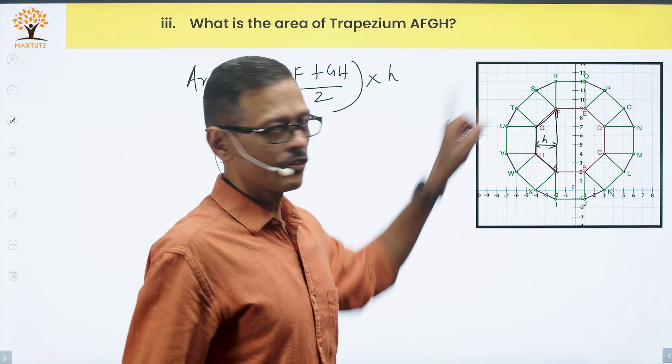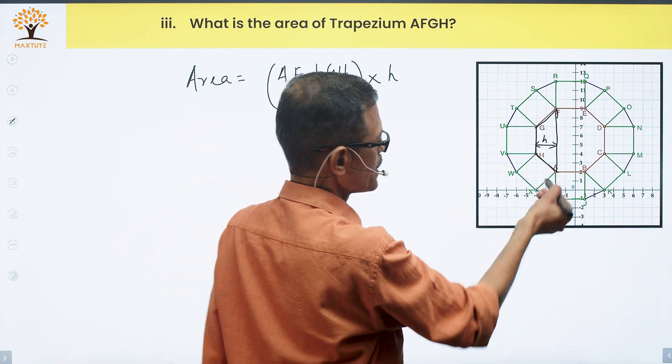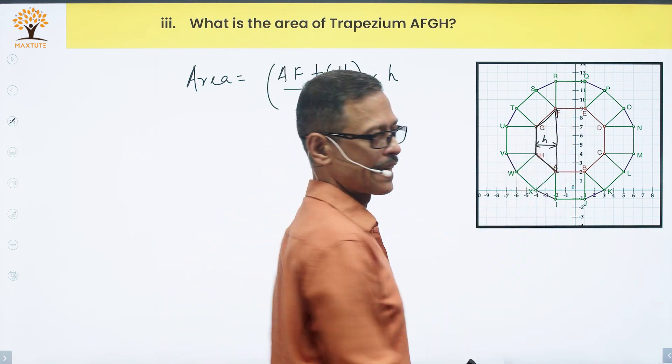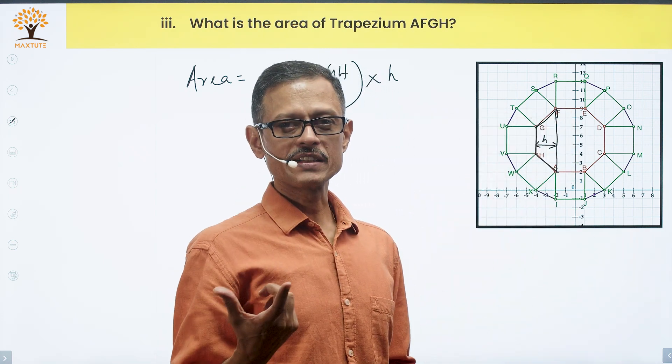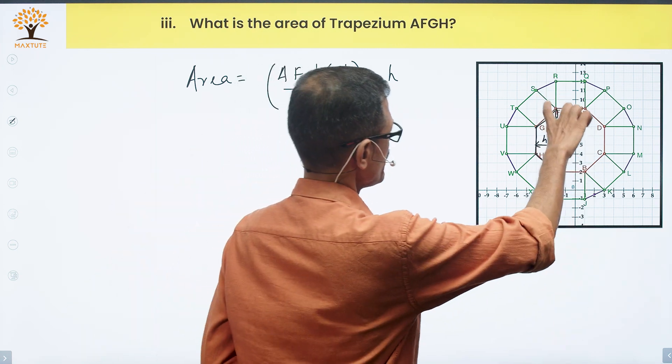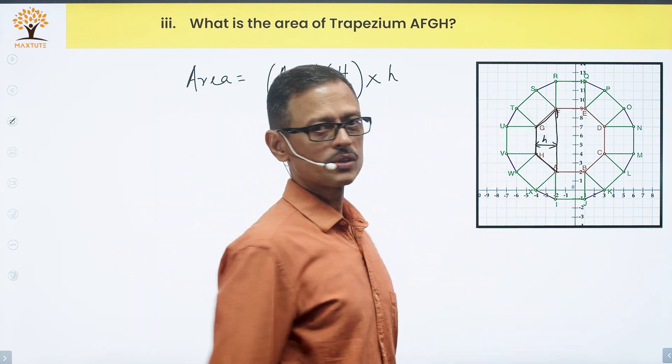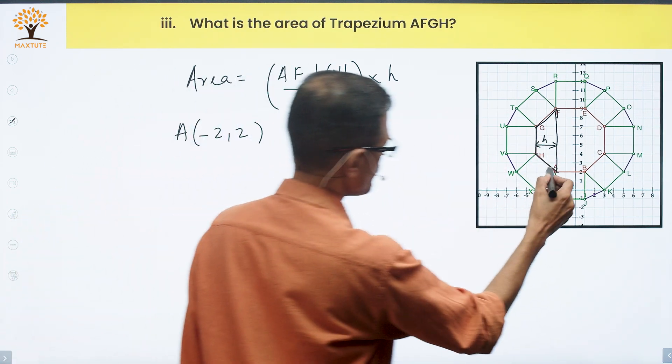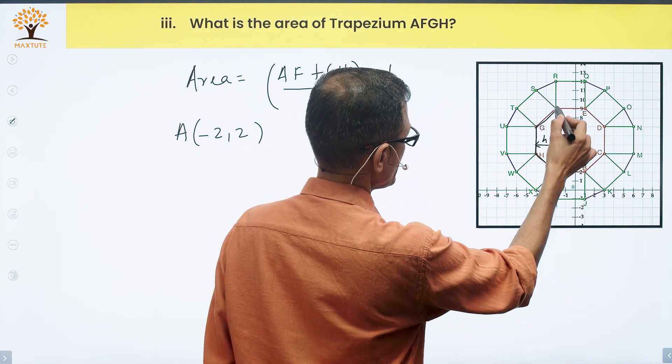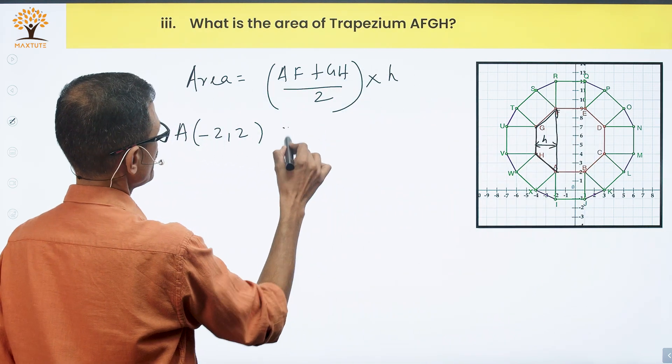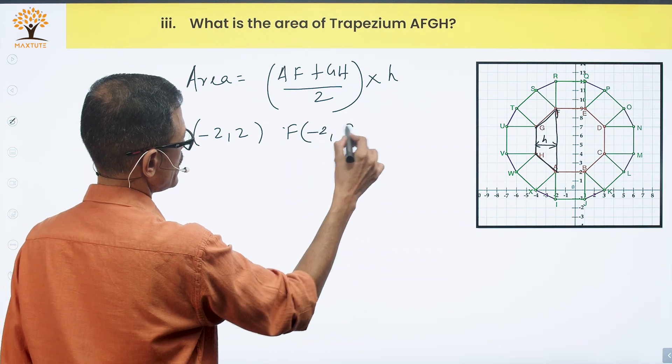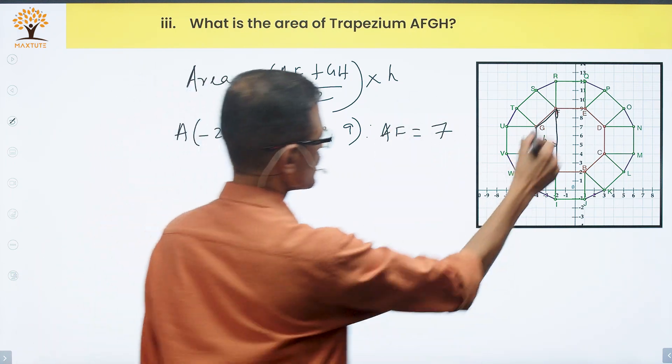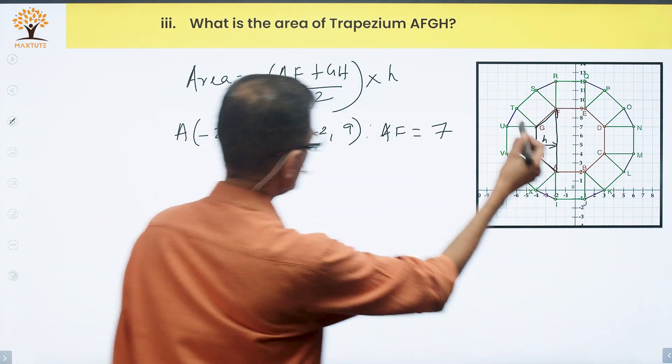Now we need to find the length of AF. This line is parallel to the Y-axis, so the X-coordinate is the same for both points A and F. Similarly, the X-coordinate of points G and H will be same. If we find the difference in Y-coordinates, we have the length of AF and GH. A coordinates are minus 2, 2. For F, it's the same minus 2, but Y is 9. So AF equals 9 minus 2, which is 7.